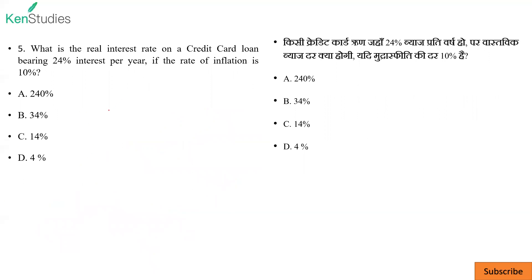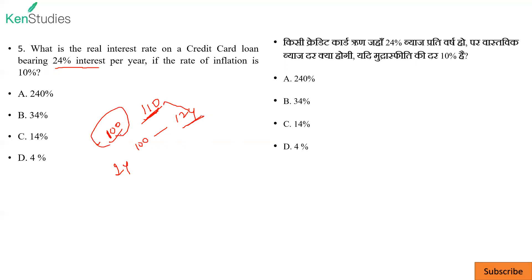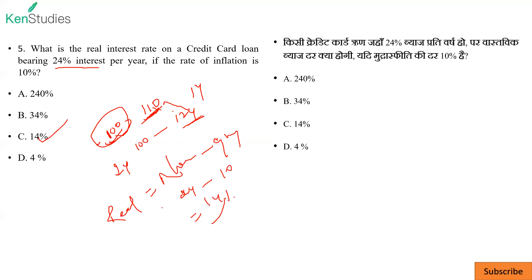Next: what is the real interest rate on a credit card loan bearing 24% interest per year if the rate of inflation is 10%? देखो, rate of inflation 10% है — कोई वस्तु आज 100 रुपया में खरीद रहे हो तो next year 110 में मिलेगी. Nominal interest rate 24% यानि 100 रुपया लिया तो 124 next year देना पड़ेगा, difference 14. Formula: real interest rate = nominal interest rate − inflation = 24% − 10% = 14%. तो answer 14% है।